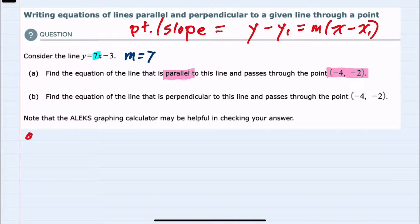For question A, since I'm writing the equation of a line parallel to that line, my slope must also be 7, and I have the point x1, y1 which will be negative 4, negative 2.